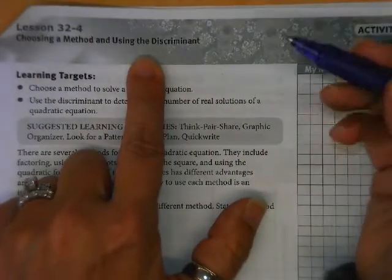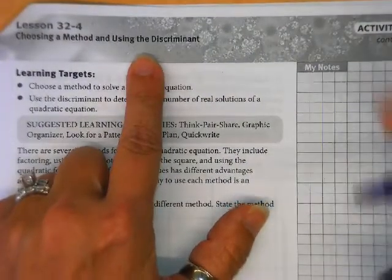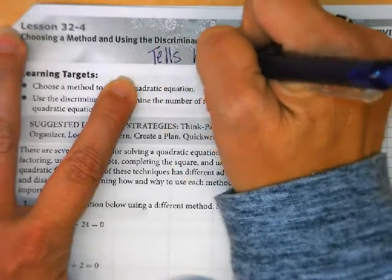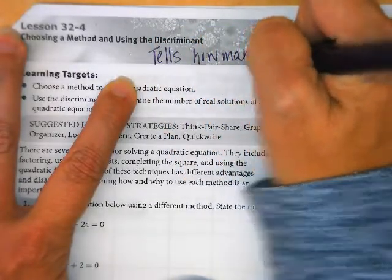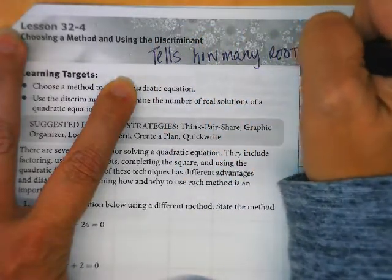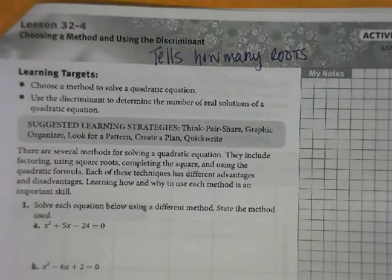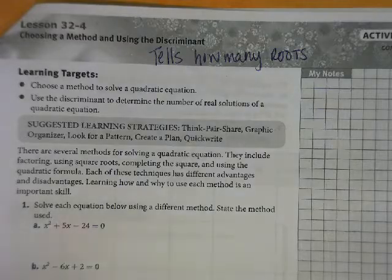We're going to talk about the discriminant today. The discriminant tells how many roots we have. All of the things that we've been working on deal with what are the roots of the quadratic equation that we're dealing with.